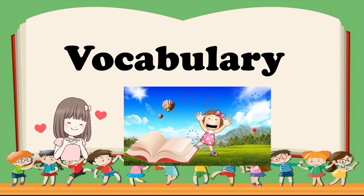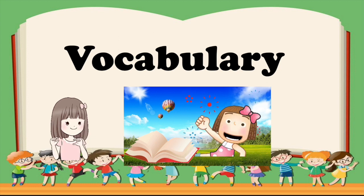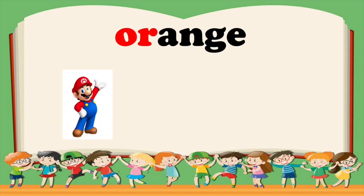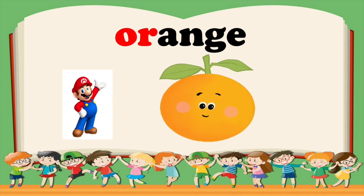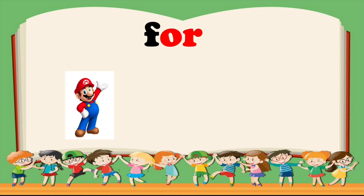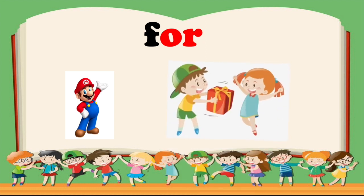Alright, let's have some words with the OR sound. Word number one: OR — Orange. Please repeat after me. Orange. Orange. That's great. Let's go to word number two: F-OR — For. For. Your turn. You're right.